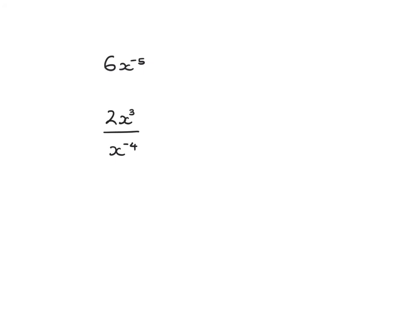Let's look at two further examples. If we had 6 times x to the power of minus 5 and we want to write it all with positive exponents, the 6 isn't affected — it just remains a 6. What does x to the minus 5 become? We know it's just 1 over x to the 5, so putting that all together we get 6 over x to the 5.